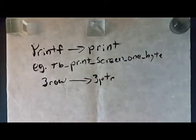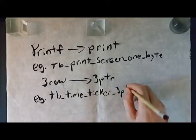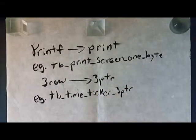Also, the three pointer method was at first called three row. Those naming conventions have been changed from three row to three pointer now. So functions from version 0.05, like time ticker three row, have been renamed time ticker three pointer.